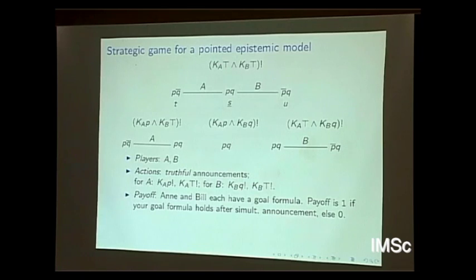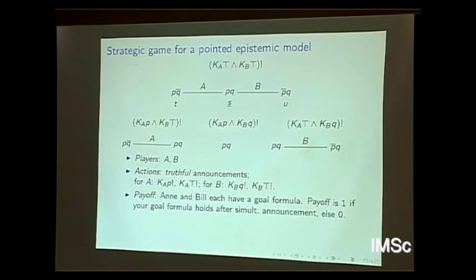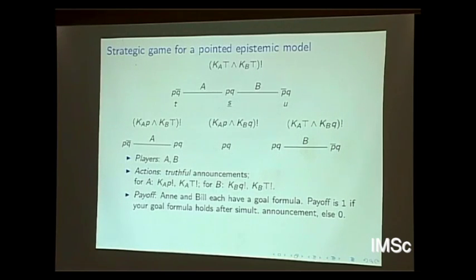[Audience:] Do you consider agents announcing that they don't know something? [Speaker:] Yes. I will define a strategy as any formula in the logic. A strategy will simply be any formula: if you know it to be true, you announce that you know it; if you don't know it, you announce that you don't know it. Then you have the same set of strategies at all points of the structure where you want to play that game.